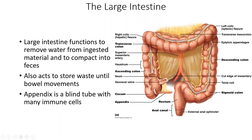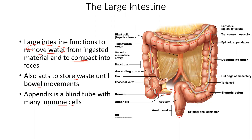The large intestine is primarily used to remove water and compact undigested material into feces. It begins at the cecum, and you have the ascending colon, transverse colon, descending colon, sigmoid colon, rectum, and the anus as the final portion. We store waste here until we have a bowel movement, but primarily it is about removing water and compacting into feces.